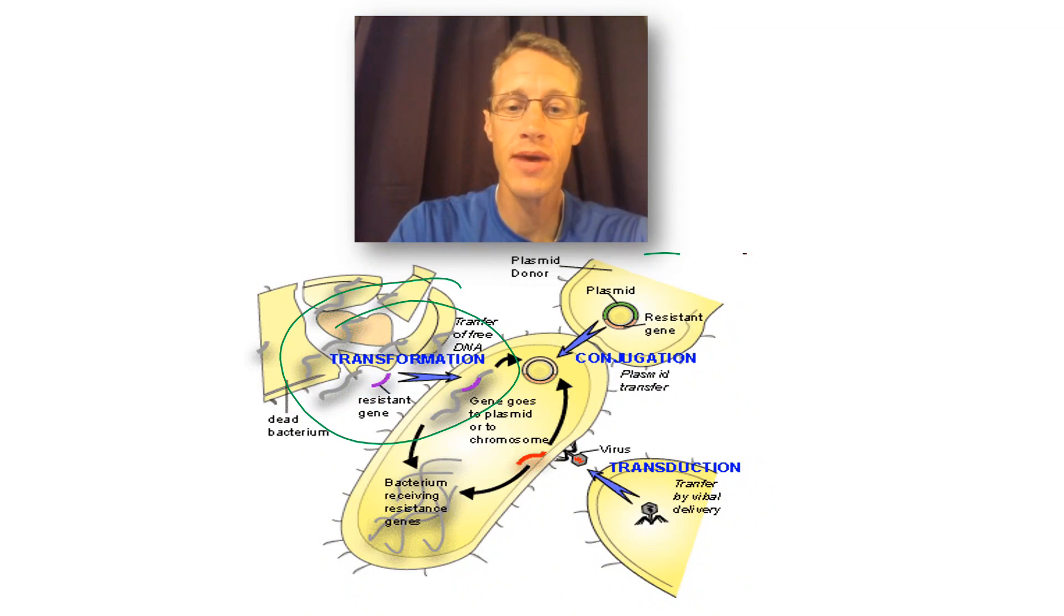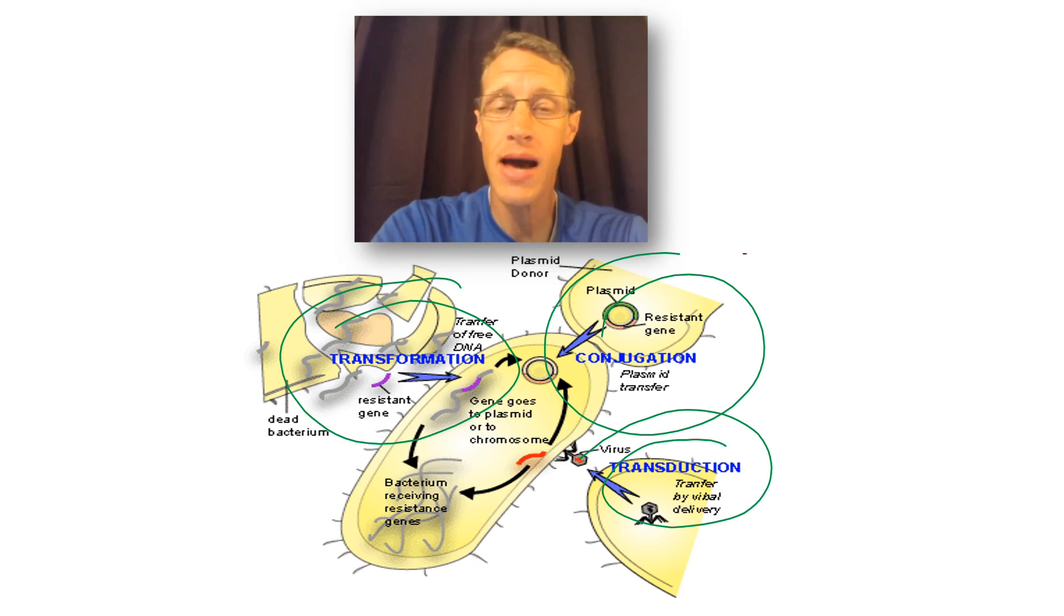If you take together transformation, conjugation, and transduction, that adds up to a lot of bacterial diversity. And prokaryotes have been doing this for three and a half billion years, making them the most successful and prolific organisms on this planet. Well, that does it for us here at CV Biology. And remember, the best thing about science is the sharing.